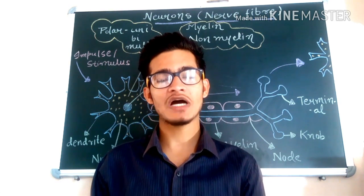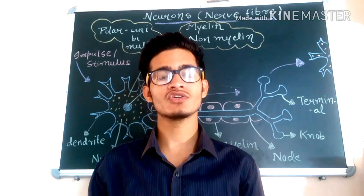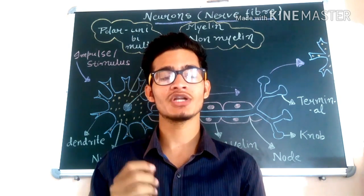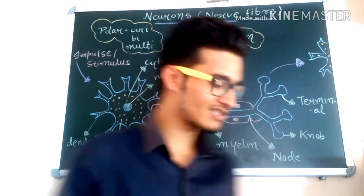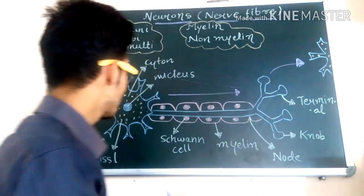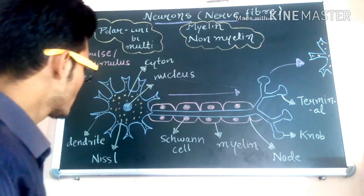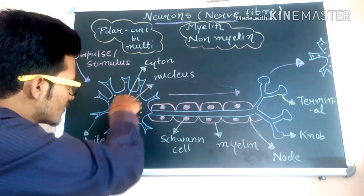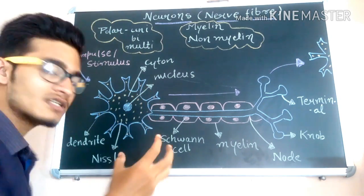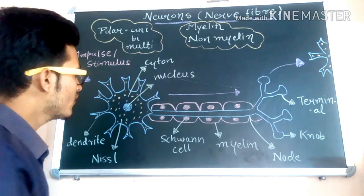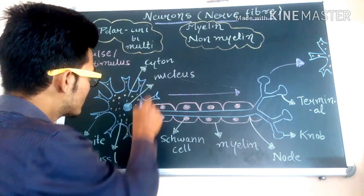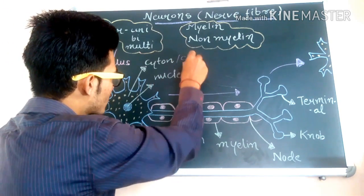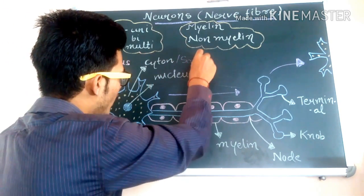There are different parts of a particular neuron, so we are going to discuss each and every part of a neuron. Let's study its structure. First of all, this particular large structure is a kind of cell, and this cell is called cytone or soma.